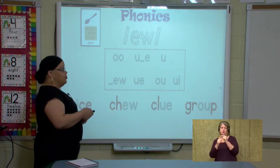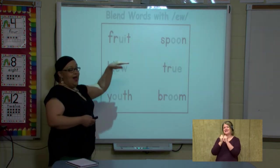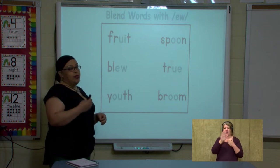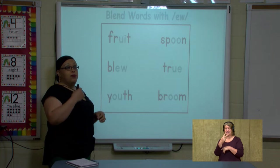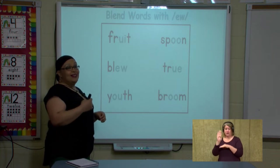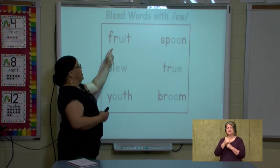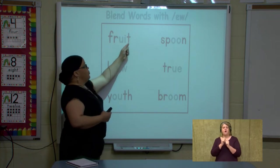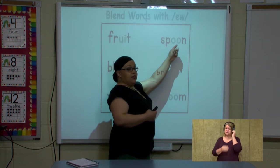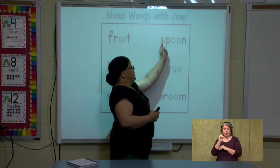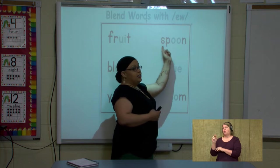Now let's do some together. Notice I highlighted all of those oo spellings. So when you see those spellings in blue, you're going to make that oo sound. Let's sound them out together. Ready? Sound — fruit. O-O says oo. Ready? Sound — spoon.